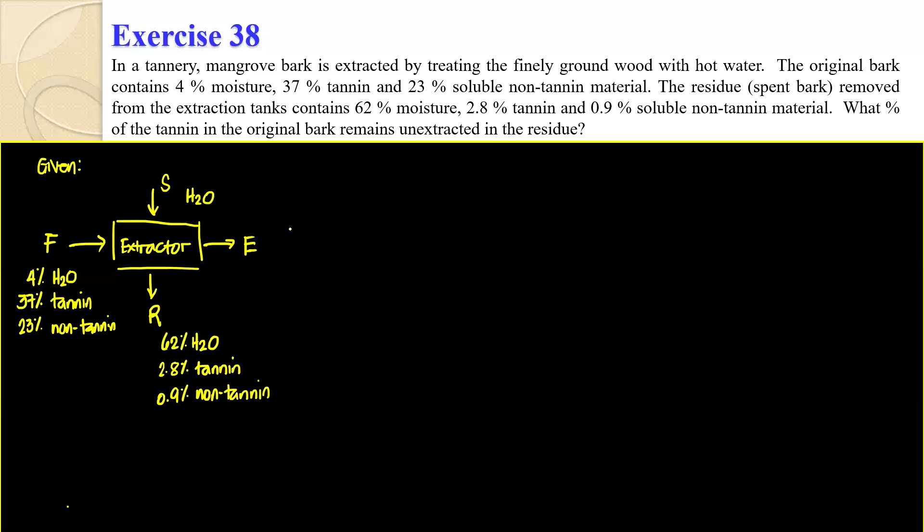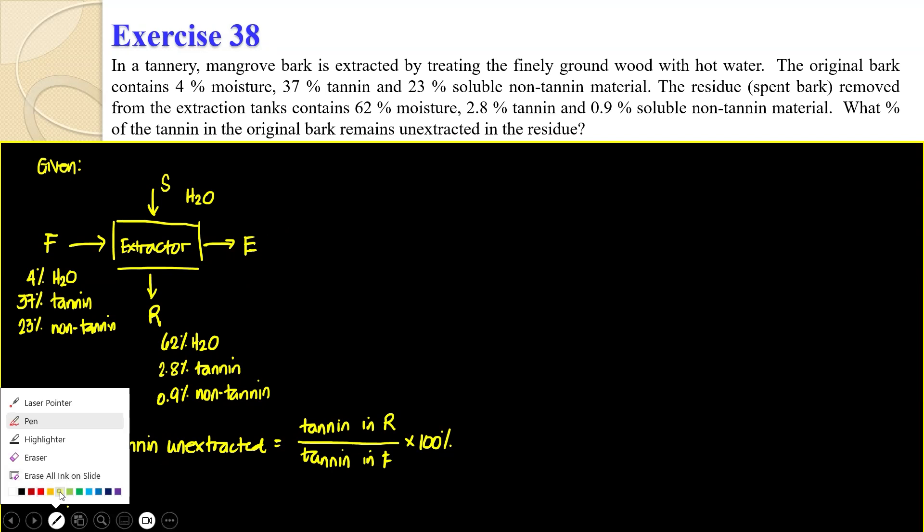Nothing is stated about the extract, so let's leave it here. What is the required? So what percent of the tannin in the original bark remains unextracted. So percentage tannin unextracted. I can see that this one would be the amount of tannin in the residue divided by the tannin in the original feed times 100. It has to be residue, not the extract. Because the amount extracted would be the amount of tannin in the extract.